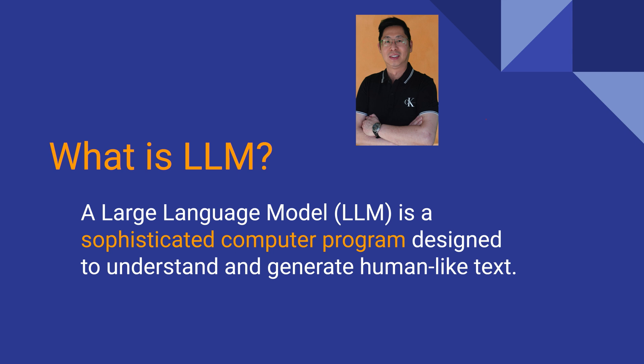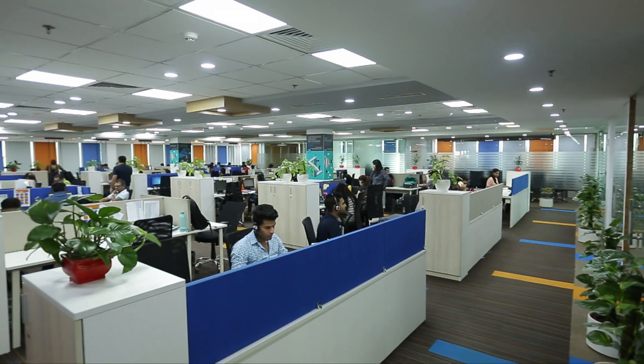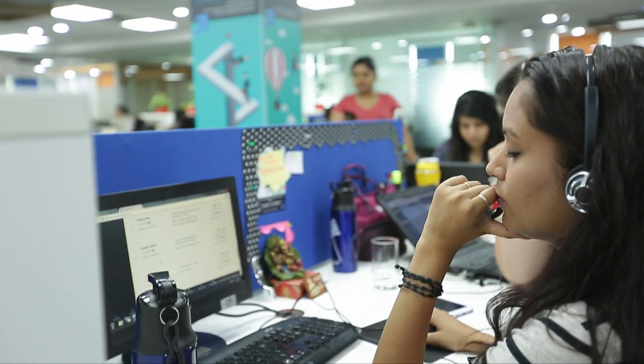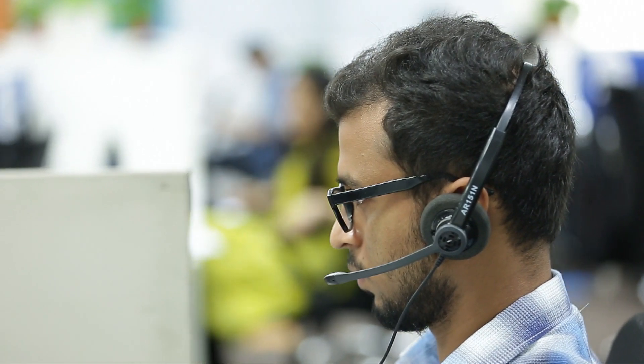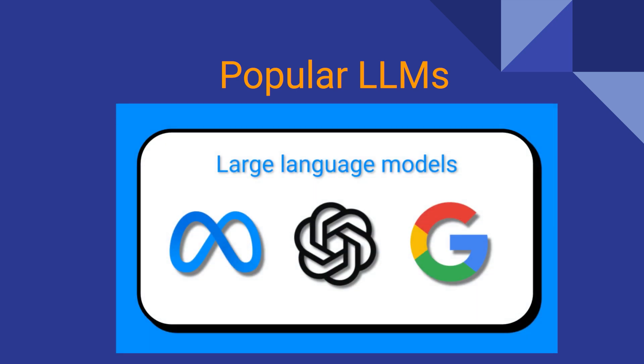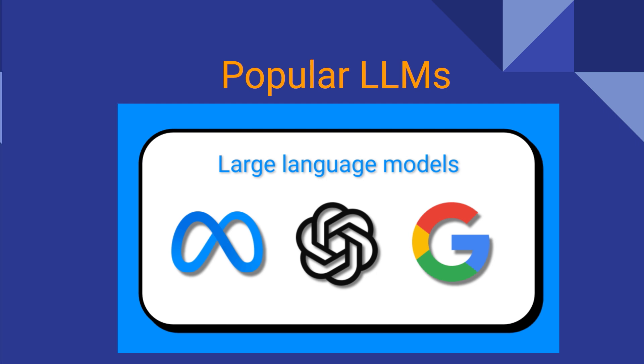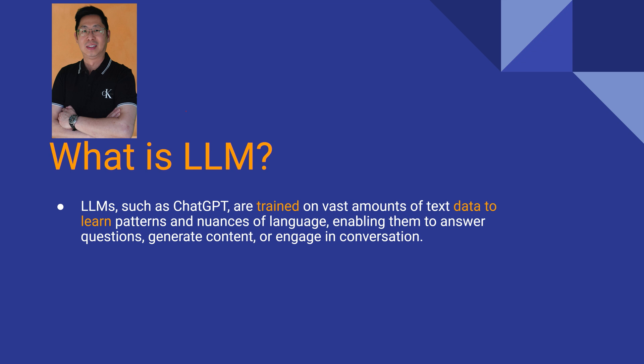What is an LLM? A large language model, or LLM, is a sophisticated computer program designed to understand and generate human-like text. Companies like Facebook, Google, and Microsoft have developed LLMs. LLMs such as ChatGPT are trained on vast amounts of text data to learn the patterns and nuances of language, with parameters in the billions and trillions, enabling them to answer questions, generate content, and engage in conversation.